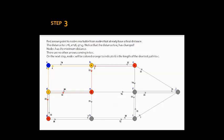On step 3, red arrows point to nodes reachable from nodes that already have a final distance. The distance to C is equal to 6, the distance to E is 16, and the distance to G is 23. Node C has the minimum distance, which is 6. There are no other arrows coming into C. Node C will be colored orange to indicate that 6 is the length of the shortest path to C.